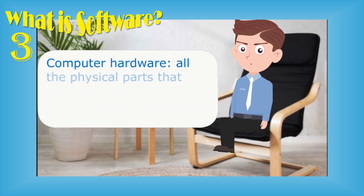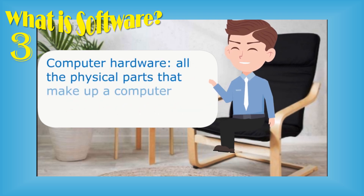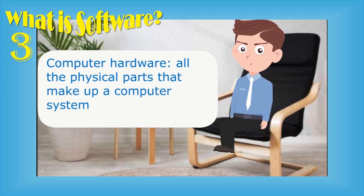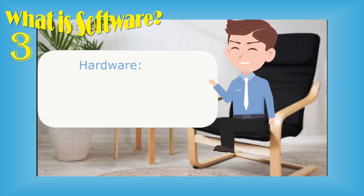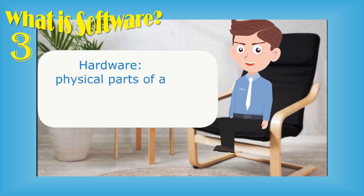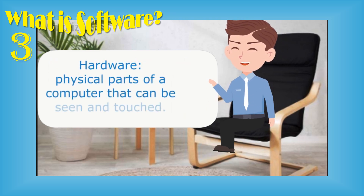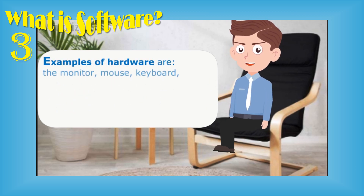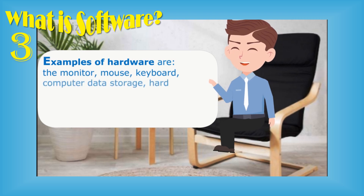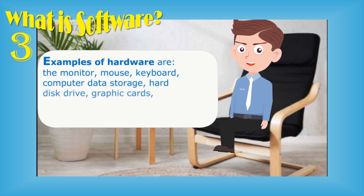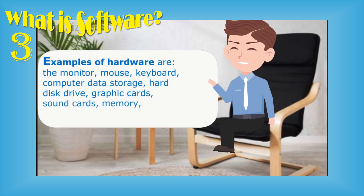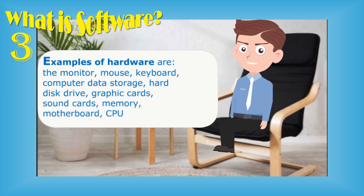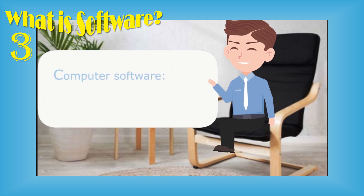The answer is: computer hardware refers to all the physical parts that make up a computer system. Hardware consists of physical parts of a computer that can be seen and touched. Examples of hardware are the monitor, mouse, keyboard, computer data storage, hard disk drive, graphic cards, sound cards, memory, motherboard, and CPU.